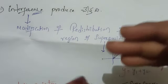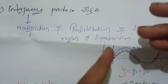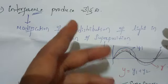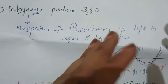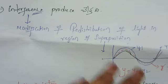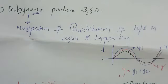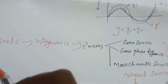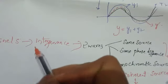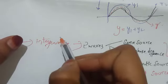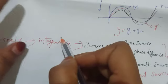The displacement of the resultant wave y is equal to y1 plus y2. So this is the superposition principle. This is the superposition concept of light — the intensity of light will be redistributed. This is the interference pattern. If we use the biprism, we can try to produce the interference pattern. Therefore, Fresnel's biprism concept is used to produce the interference pattern.